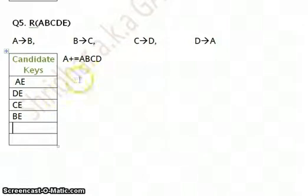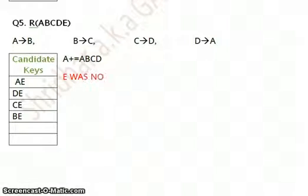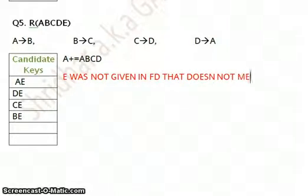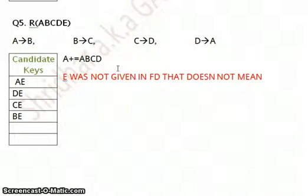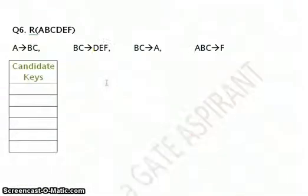The new concept here was that E was not given in the functional dependencies. That does not mean we are not supposed to cover it. We still have to cover all attributes in the relation, so E is included in every candidate key. We move on to the next question.